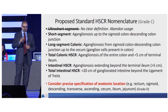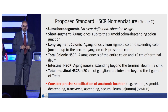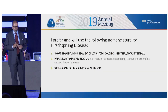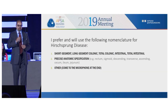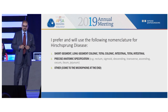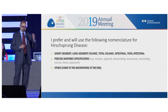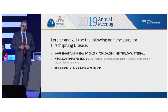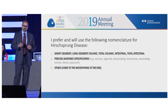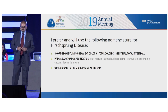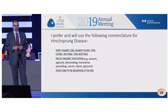Rather than calling it total colonic or long-segment colonic, we should really say where the ganglion cells are — rectum, sigmoid, descending, et cetera. For the second audience response question: which would you prefer and which would you use? The segment-based definition, or would you prefer to use a precise anatomic specification, or something else? Please vote.